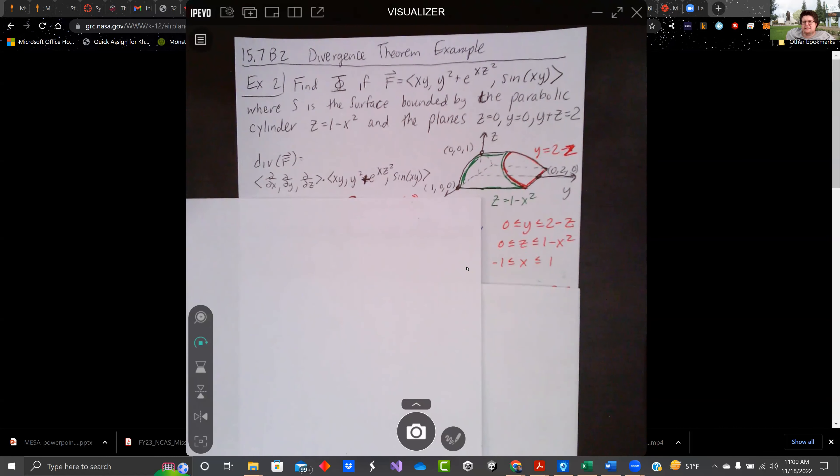Hey there, everybody. Welcome back. This is 15.7 in Calculus 3 in Anton's 11th edition book. It's the Divergence Theorem. Let's just jump right into it.